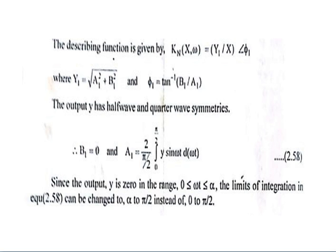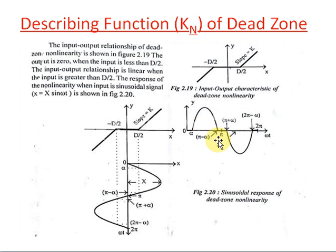Next, the describing function. The describing function kn equals y1/X at angle phi1, where y1 = sqrt(a1² + b1²) and phi1 = tan⁻¹(b1/a1). From the figure it is clear that this non-linearity exhibits both half-wave and quarter-wave symmetry. The upper half is the mirror image of the lower half.